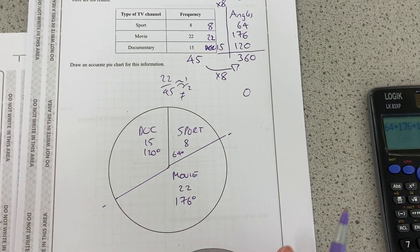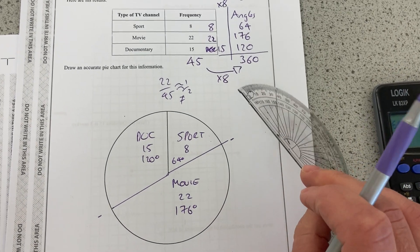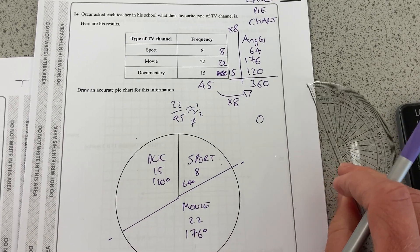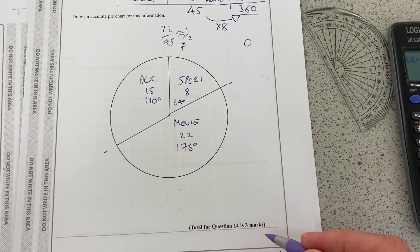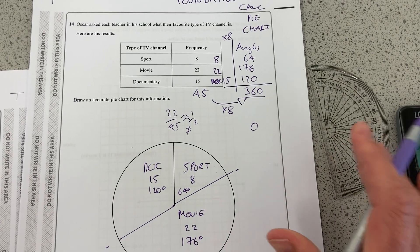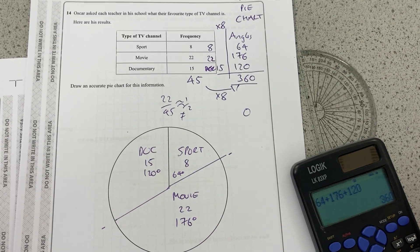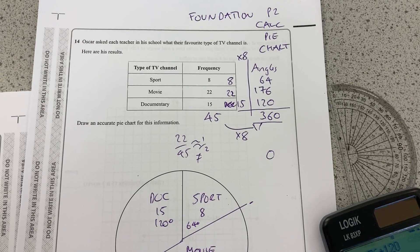But if you follow those steps and use two hands to line that up correctly, then you should get exactly 360 degrees. Okay, that's a nice three mark question on how to draw a pie chart, protractor and calculator needed for that. Thanks for watching. Don't forget to like, subscribe and share and good luck for your exams.